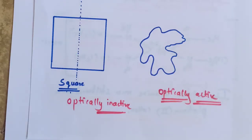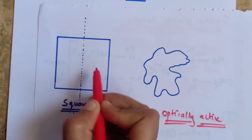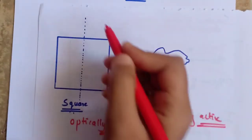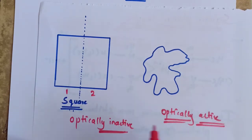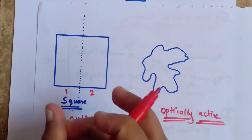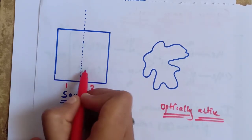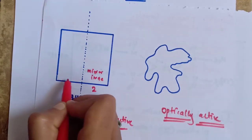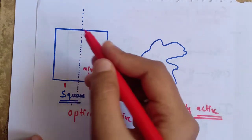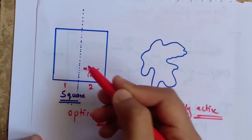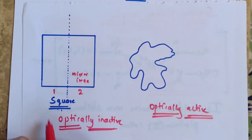To explain plane of symmetry, consider a square as an example representing a coordination complex. Draw an imaginary line that divides this molecule into two halves — the first half and the second half. You can see this imaginary line has cut the molecule into two equal parts. You can observe that this structure is a mirror image of this structure. It is defined as the imaginary plane which divides the molecule in such a way that the part on one side is a mirror image of the other side. If the molecule has a plane of symmetry, then it is said to be optically inactive.